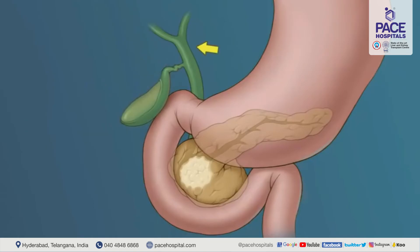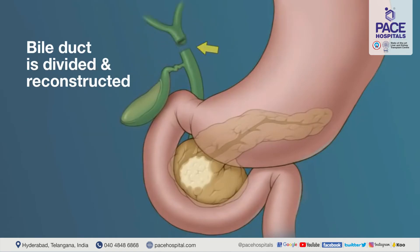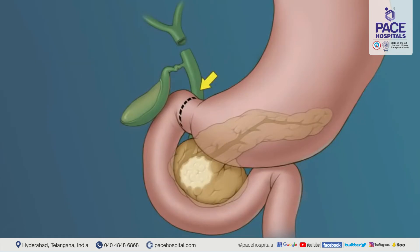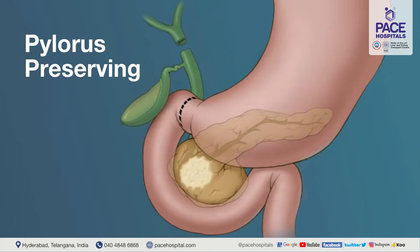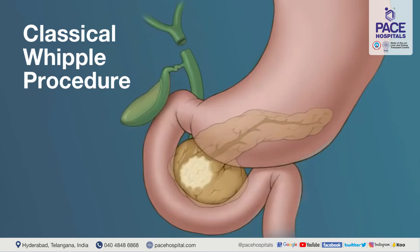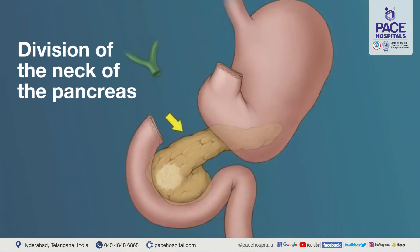In addition to the gallbladder, the bile duct is also divided because it passes through the head of the pancreas and needs to be divided and reconstructed. The intestine above the pancreas can be divided at two levels. One is the pylorus-preserving operation, in which the first part of the intestine is divided just beyond the stomach. More commonly, we do the classical Whipple's operation, in which a part of the stomach is also taken out with the tumor specimen. The next step involves division of the neck of the pancreas so the head can be separated from the rest of the pancreas.